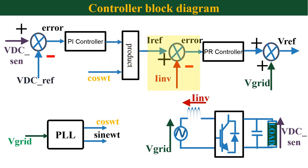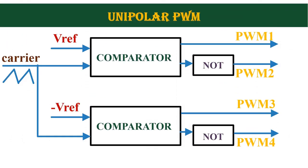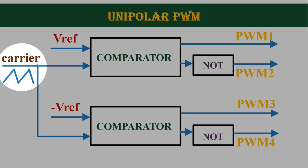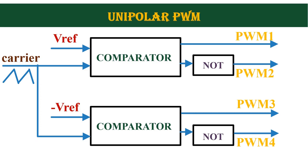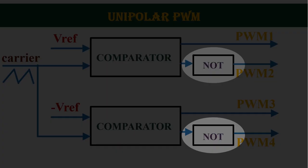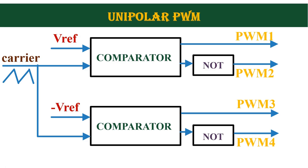This current reference is compared with the actual inverter current and the error is found. This error is fed to a PR controller. I have explained more about PR controllers in one of my previous videos — I will leave the link in the i button. Finally, we add the grid voltage to the PR controller output to get the reference voltage. This reference is fed to the PWM generation block, which uses unipolar PWM technique, where the reference voltage is compared with a triangular carrier wave. The output of each comparator is inverted and connected to each IGBT.